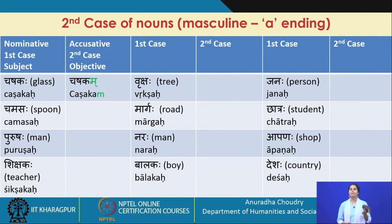Moving on, we have the word in the feminine. So sthalika becomes sthalikaam — sthalikaam pashyami. Mala becomes malam — malam pashyami. Mahila becomes mahilam — mahilam pashyami. Balika becomes balikam — balikam pashyami.